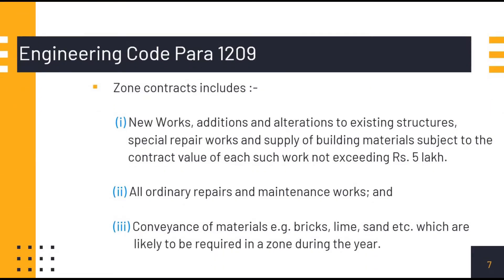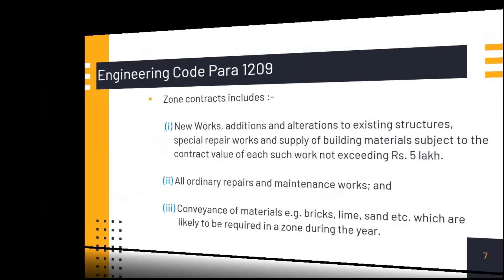The Engineering Code explains about the works included in Zone Contracts. Zone Contract includes new works, addition and alteration to existing structures, special repair works and supply of building materials subject to the contract value of each such work not exceeding Rs. 5,000, all ordinary repairs and maintenance works, and conveyance of materials — for example, conveyance of bricks, limes, sand, etc. — which are likely to be required in a zone during the year.